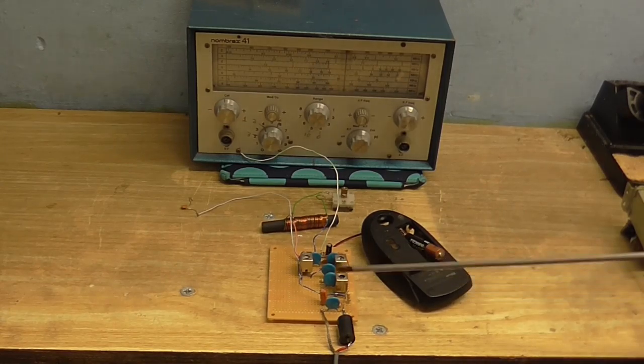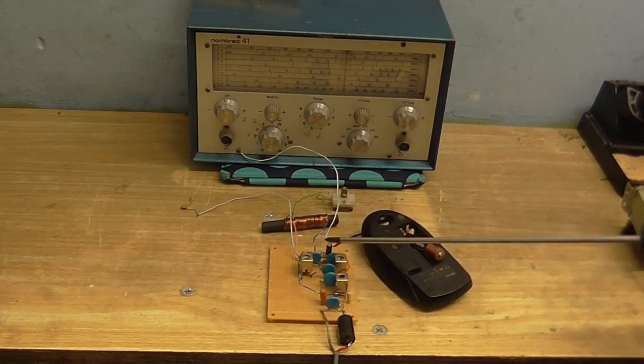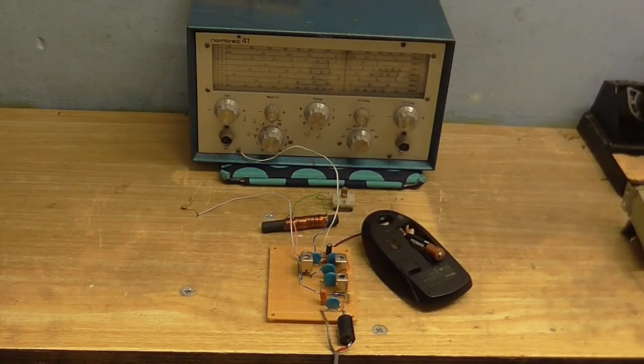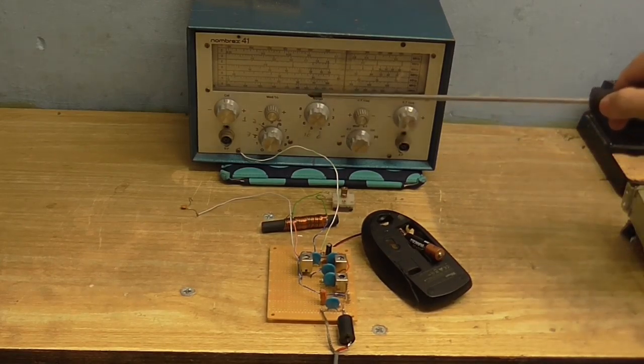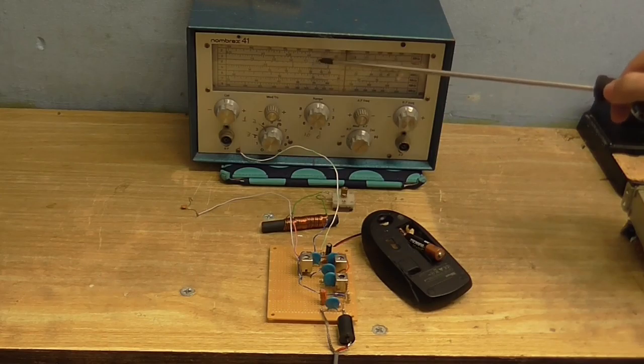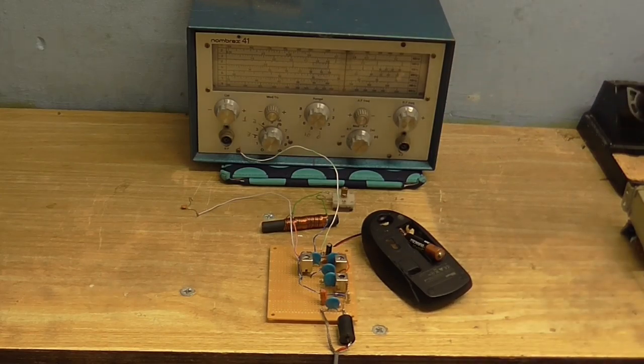So, I've built up a little Superheterodyne AM receiver, but there's just one vital component missing, and that is the local oscillator. So, to fill in for that, I've got this signal generator, and this is going to be the local oscillator, because I'm going to do some experiments.